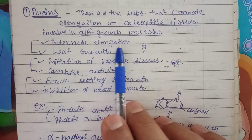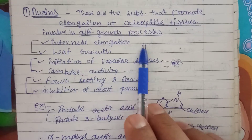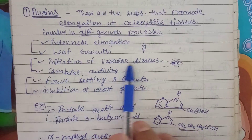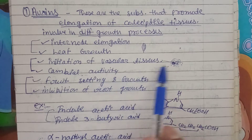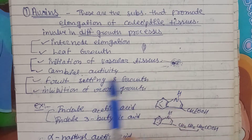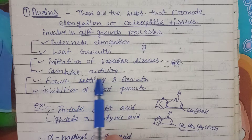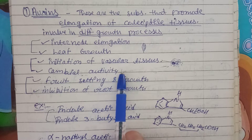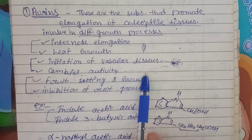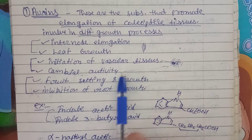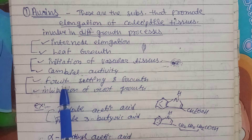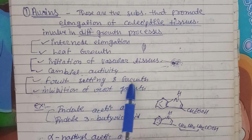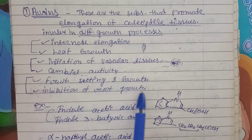For example, internode elongation, leaf growth, initiation of vascular bundles — xylem, phloem and all those things — maybe in the fruit, maybe in the leaf. Cambium activity: cambium tissues will be there into the stem between the bark and wood. So this activity can also be monitored by the auxin — fruit setting and growth inhibition of root growth.